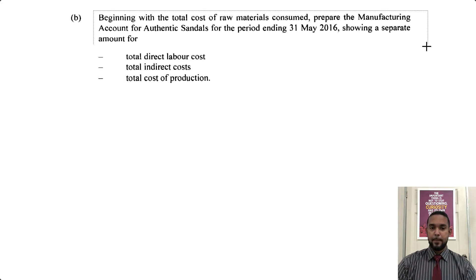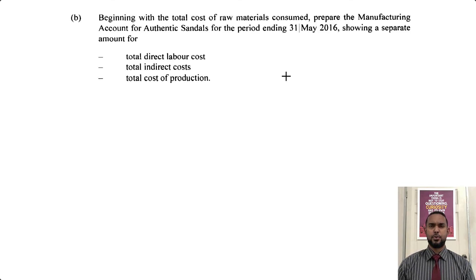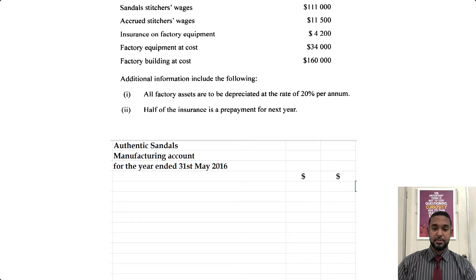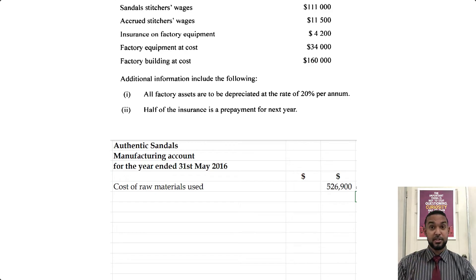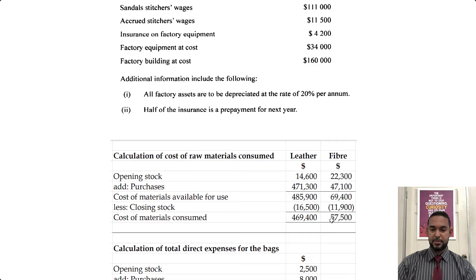For the final part of the question, beginning with the total cost of raw materials consumed, prepare the manufacturing account for Authentic Sandals for the period ending 31st May 2016, showing a separate amount for total direct labor costs, total indirect costs, and total cost of production. So the cost of raw materials was $526,900 — we got that from adding up the leather and fiber totals: $469,400 and $57,500.